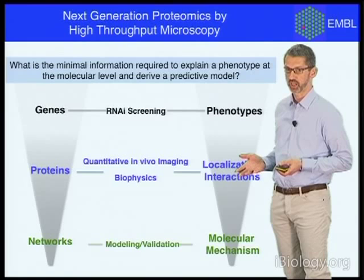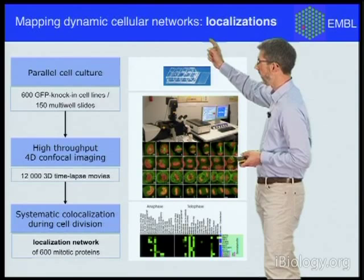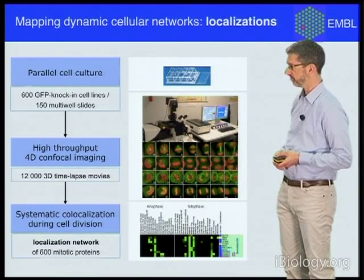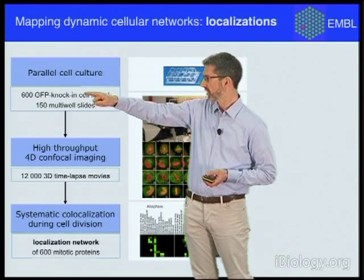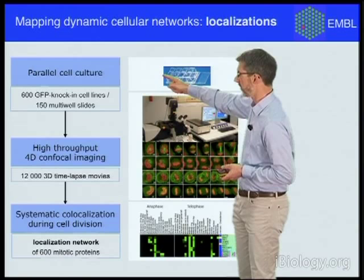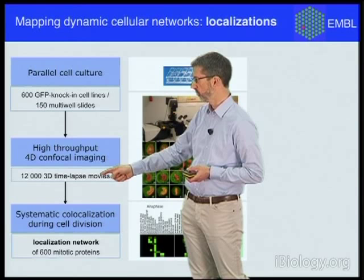The first information we would like to have about cellular protein networks is systematic localization information, because where a cell has its protein localized is often informative about function. Going back to the example of cell division, where we had about 600 genes — what we now need is to GFP-tag the proteins encoded by these 600 genes, put them into cell lines, and multiplex the analysis in multi-well plates. The assay for localization would then be high-throughput, high-resolution confocal imaging in three dimensions over time, recording many movies of the different proteins, and then deriving in the computer the colocalization and constructing the localization networks.